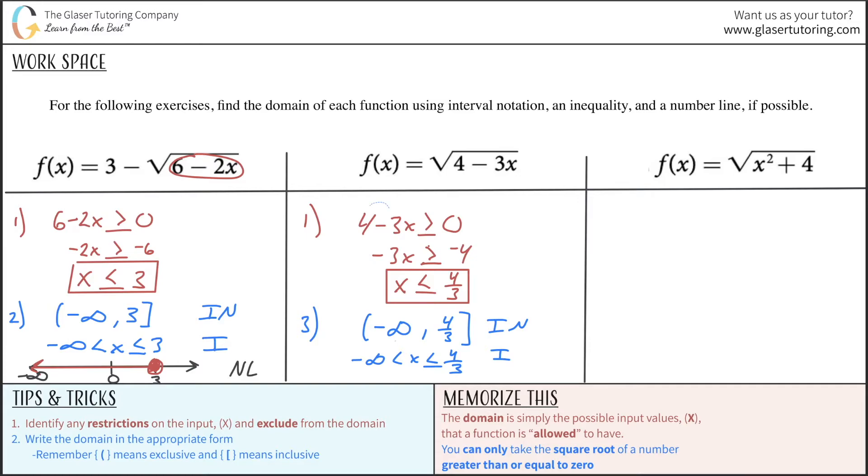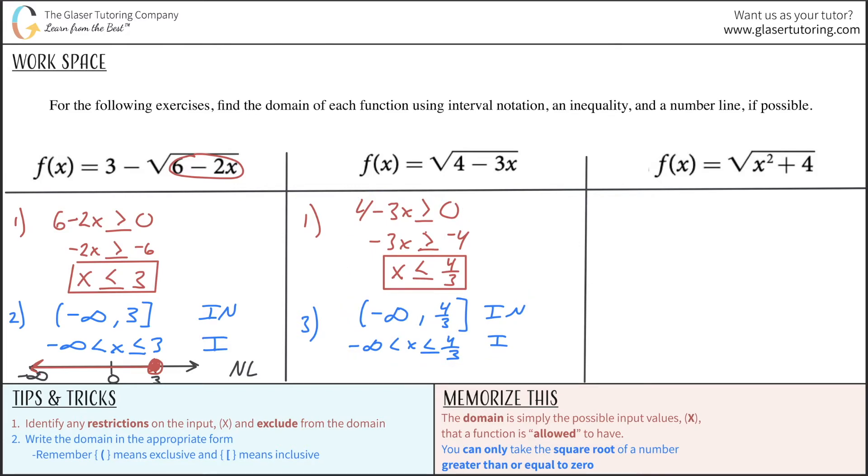And then we can draw our number line. Here is zero, let's say. Four thirds will be somewhere out here. And it includes four thirds, so fill in the circle, shade all the way then to the left. It goes all the way out to the value of negative infinity. So that takes care of that. And I just realized, I don't know how I went from number one to number three here. It should have been a number two.